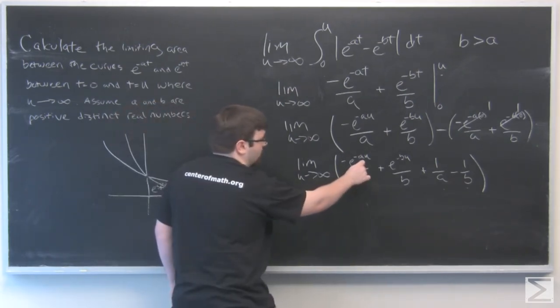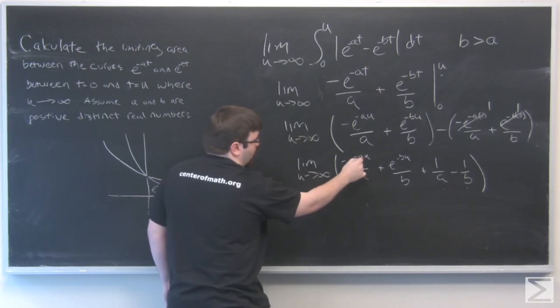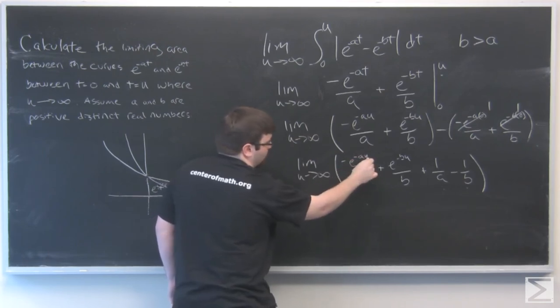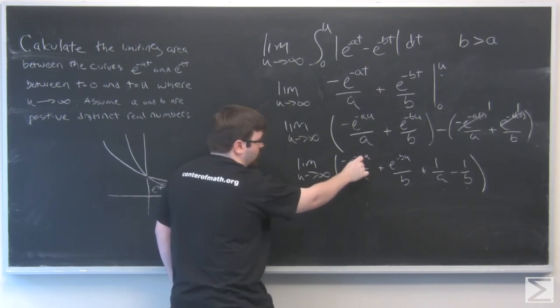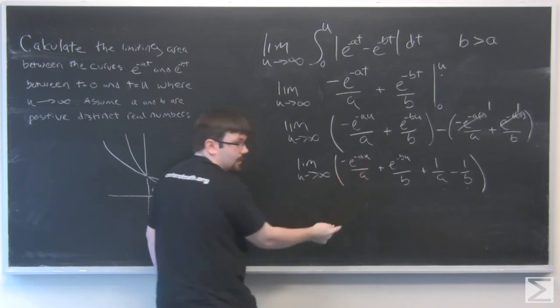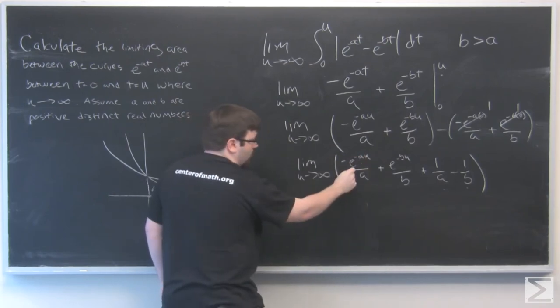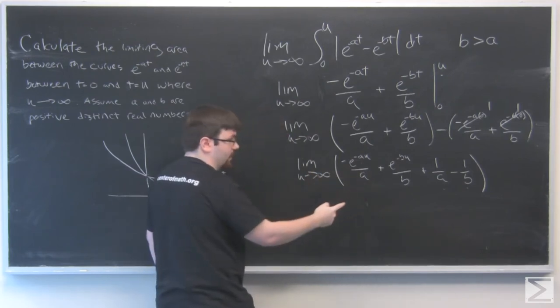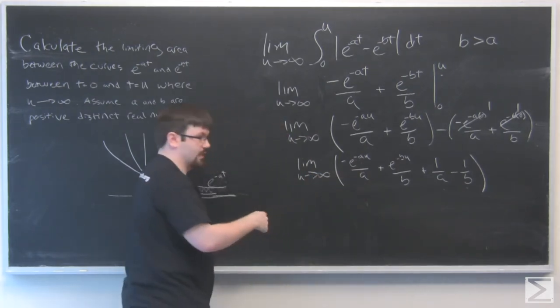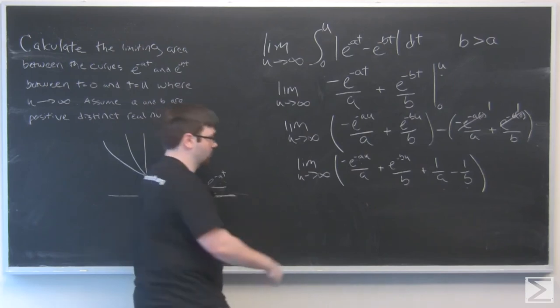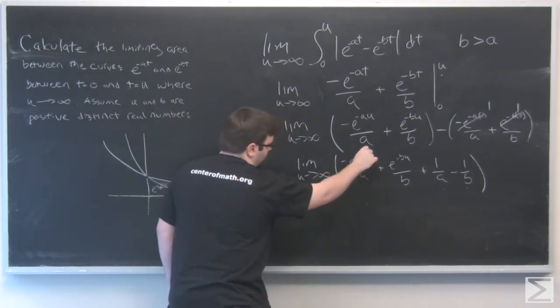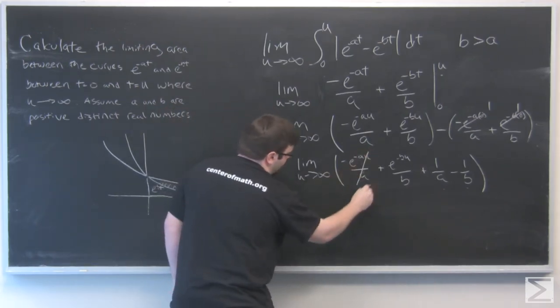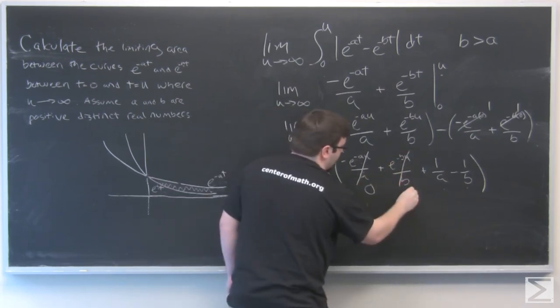And our first two terms have a negative exponent, so we can think of that as being in the denominator of the fraction. And so as u goes to infinity, that would be the same as one over infinity, which will go to zero. That would just exponentially increase in the denominator, so that goes to zero. This goes to zero.